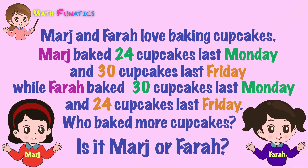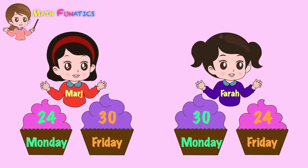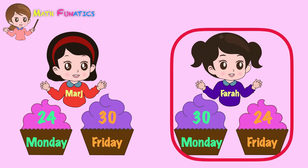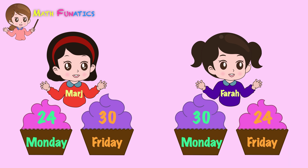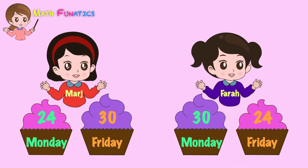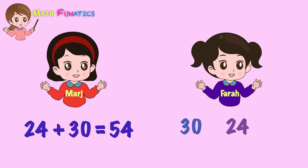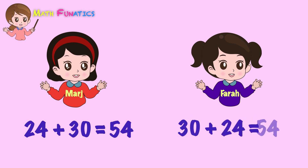Let's analyze the problem. Marge was able to bake 24 and 30 cupcakes. Farah, on the other hand, was able to bake 30 and 24 cupcakes. To know who baked more cupcakes, we simply have to do addition. For Marge, we have 24 plus 30 equals 54. Then for Farah, we have 30 plus 24 equals 54.